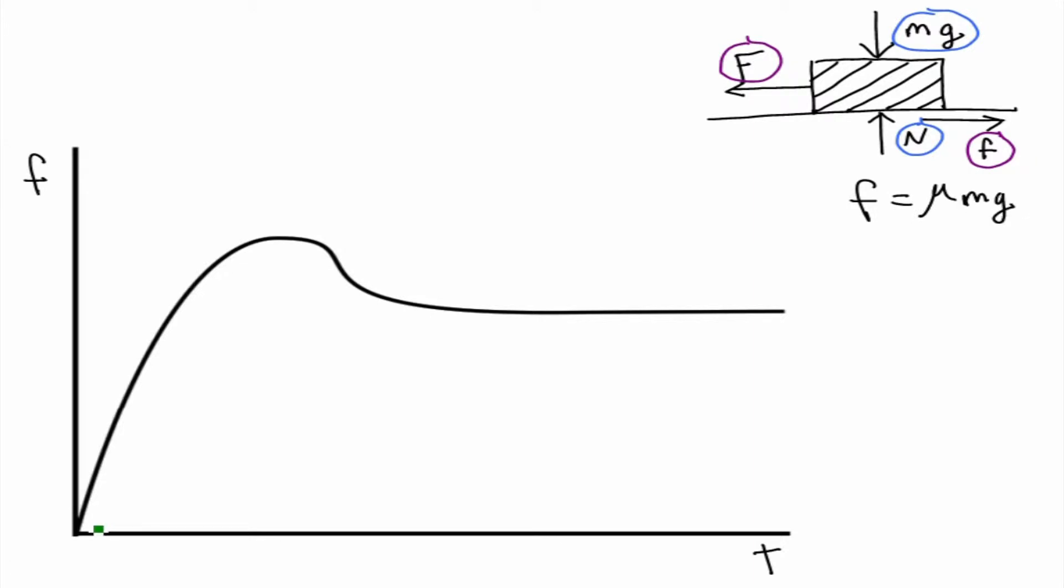Now if we look at our first part of the graph of our friction force with respect to time, all the way up to the peak, we have our static friction, which is going to be less than or equal to our mu times mg. And when we reach the peak, our maximum static friction is going to equal our mu times mg.